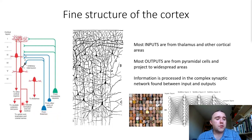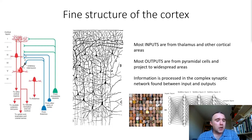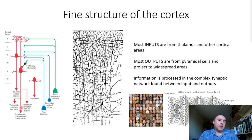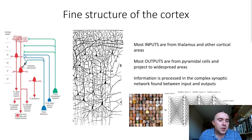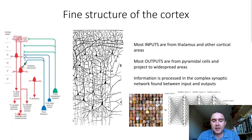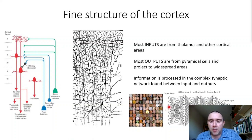The majority of outputs from the cerebral cortex are the pyramidal cells — large neurons which send long projections down to structures such as the brainstem, basal ganglia and spinal cord. So essentially what we've got here is a reflex arc, where we have sensory information coming in and motor information going out. But this is no simple reflex arc, because between the input and the output, there is a tremendous amount of complex information processing taking place.